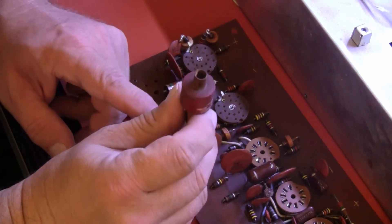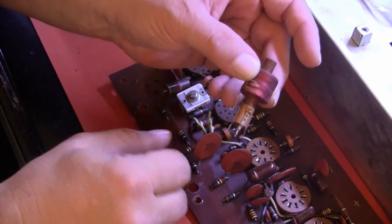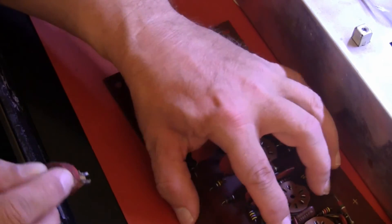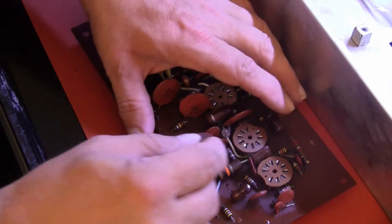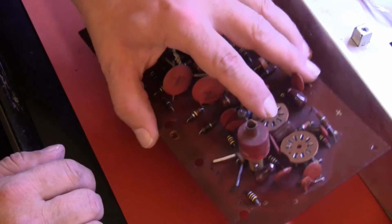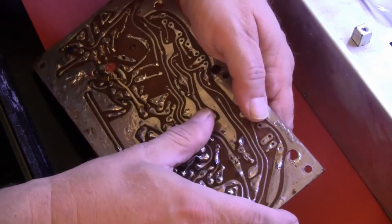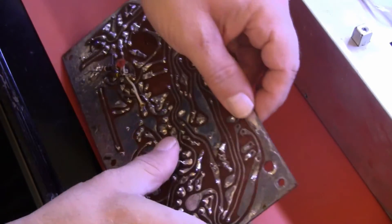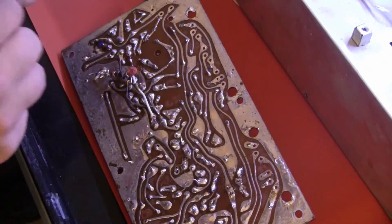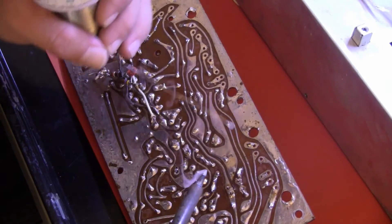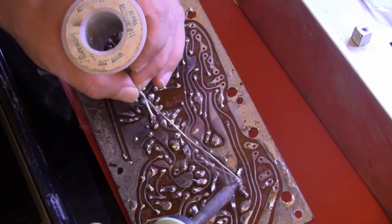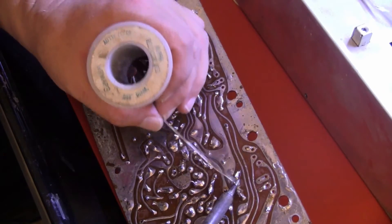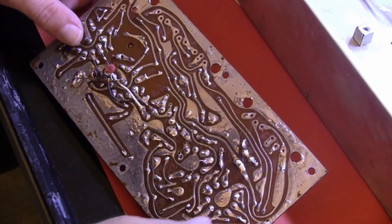The first soldering task will be to reinstall this horizontal ringing coil, as Al Denson referred to it. It is located right here on the circuit board. Well, it's soldered in.